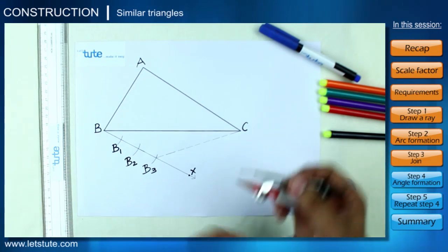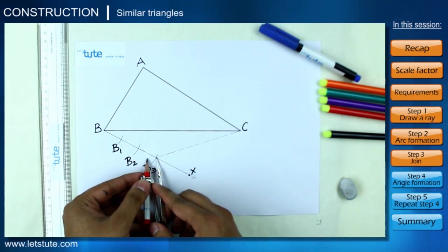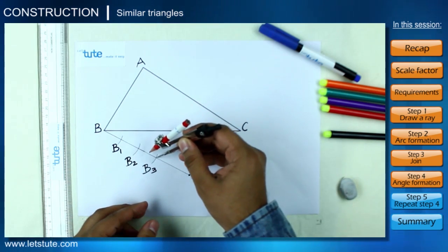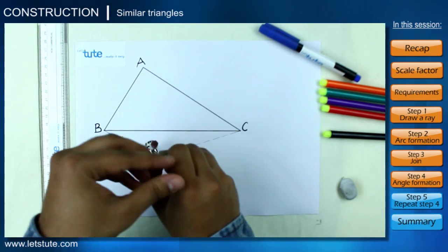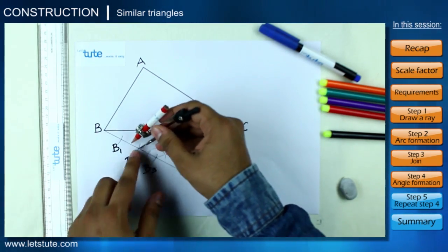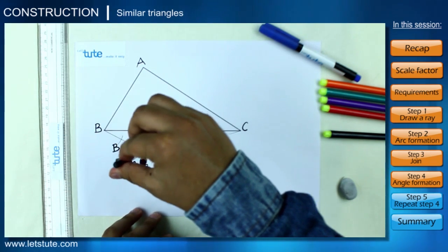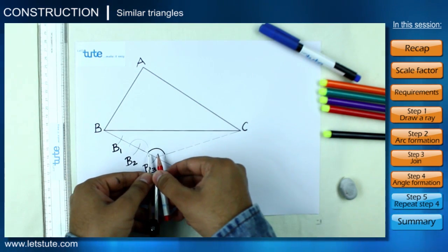Let me show you how we can do it. Draw an arc of appropriate length with the compass from point B3 so that it cuts the ray BX and B3C. Repeat the same on point B2 by keeping the same measurement on the compass.